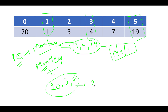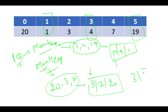The min heap will have elements 20, 3, and 7 added to it. It will sort those internally in increasing fashion, giving us 3, 7, and 20. Now we alternately pick elements — starting from the min heap for even indexes: 3, then 19 from max heap, then 7, then 4, then 20, then 1. This gives us our final answer: 3, 19, 7, 4, 20, 1.